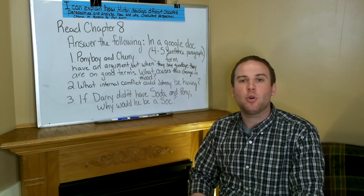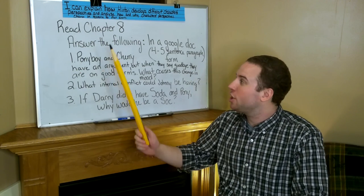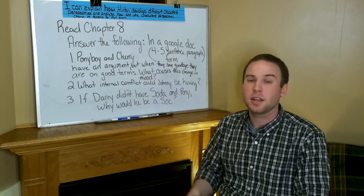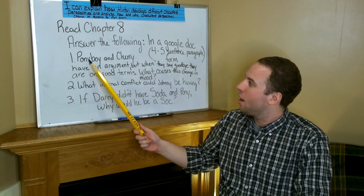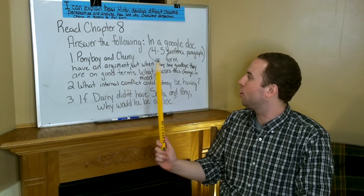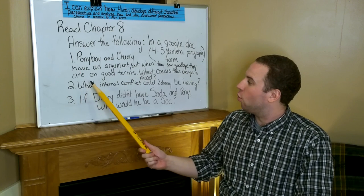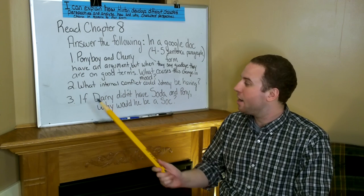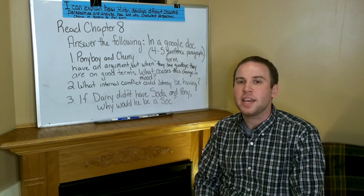For today's assignment you are going to read Chapter 8 of The Outsiders. I want you to answer the following questions in a Google Doc in 4-5 complete sentences with capital letters and periods. Number one: Pony and Cherry have an argument, but when they say goodbye they are on good terms — what causes this change in mood? Number two: What internal conflict could Johnny be having? Number three: If Darry didn't have Soda and Ponyboy, why would he be a Soc?